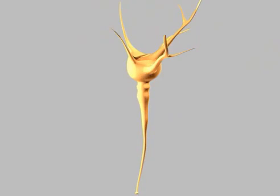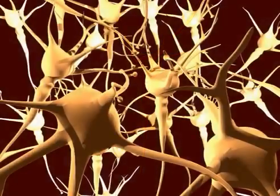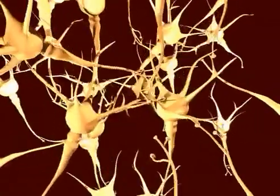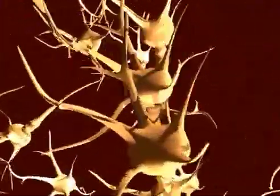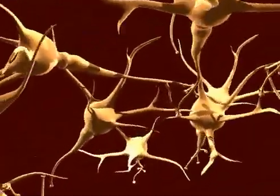These cells are very specialized, with long extensions through which they talk to each other and form large and complex networks. These networks are the basis of how the brain does what it does.